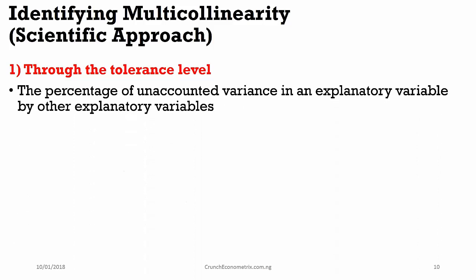What is a tolerance level? It is that percentage of unaccounted variance in a regressor. So, when you do your regression, you are going to have what we call the R squared. When you deduct the R squared from 1, the unaccounted variance will be the tolerance level. This shows that level or the percentage that cannot be explained by other regressors in this particular regressor.